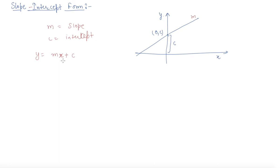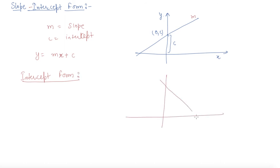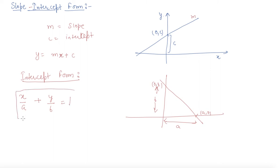Now let us discuss about another intercept form — it is only intercept form. In that case, both the intercepts will be given. Let us say this point is a comma 0 and this point is 0 comma b, where this distance is a and this distance is b. In that case, the equation of the line will be x by a plus y by b equals 1. This is the equation of the line when we are given the two intercepts.